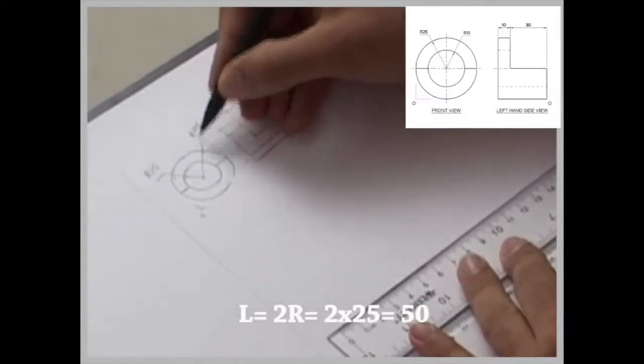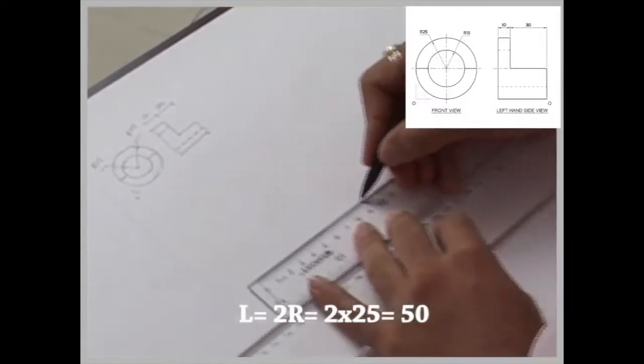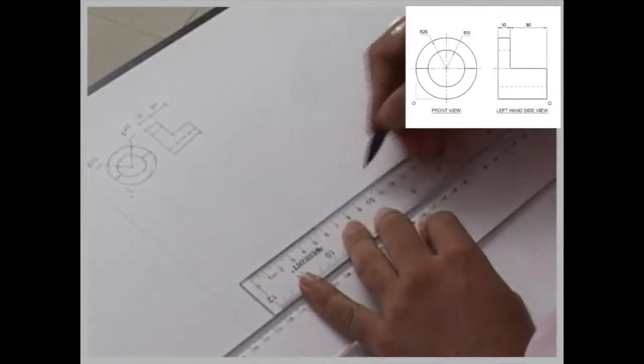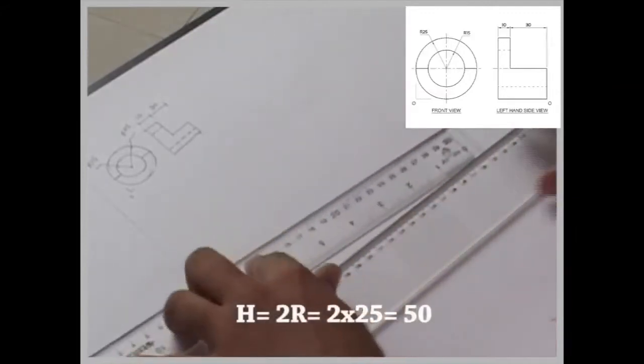Now length is how much? This is 25, radius is 25, so the length will be 15, height will be also 15.